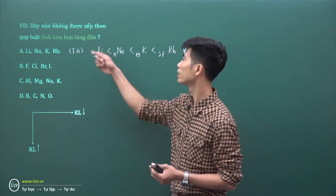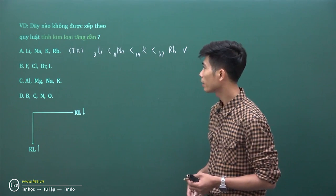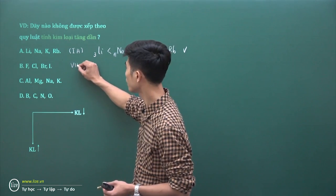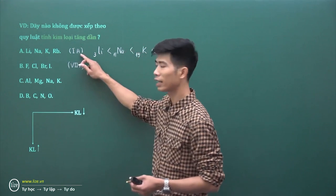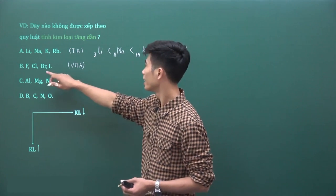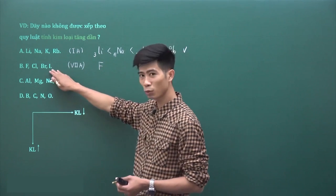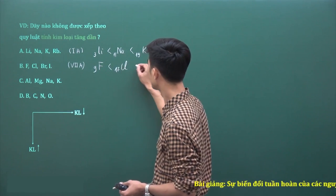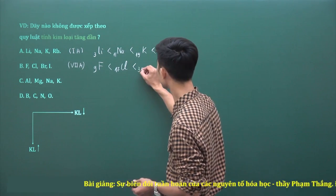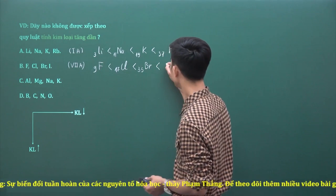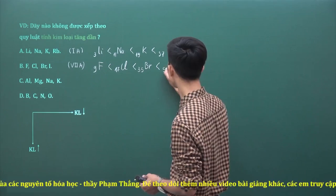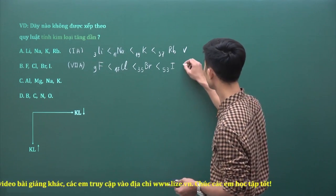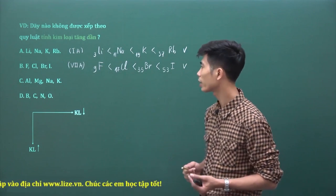Chúng ta đang cần tìm dãy không được sắp xếp theo chiều tăng dần tính kim loại. Dãy B gồm các nguyên tố nhóm 7A (halogen): Flo Z=9, Clo Z=17, Brom Z=35, Iod Z=53. Sắp xếp đúng theo chiều tăng dần điện tích hạt nhân từ trên xuống dưới trong cùng một nhóm, nên tính kim loại tăng dần - đáp án B cũng chính xác.